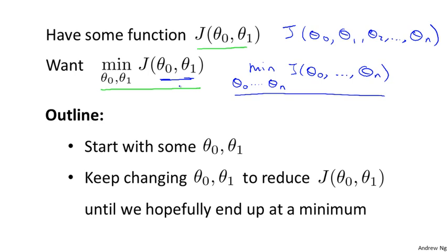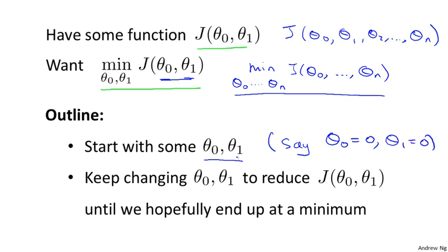Here's the idea for gradient descent. What we're going to do is start off with some initial guesses for θ₀ and θ₁. It doesn't really matter what they are, but a common choice would be to set both θ₀ and θ₁ to 0 — just initialize them to 0. Then in gradient descent, we'll keep changing θ₀ and θ₁ a little bit to try to reduce j(θ₀, θ₁) until hopefully we wind up at a minimum, or maybe a local minimum.